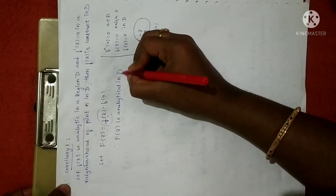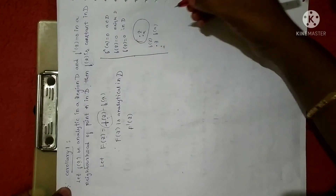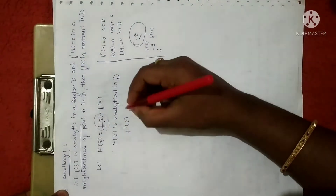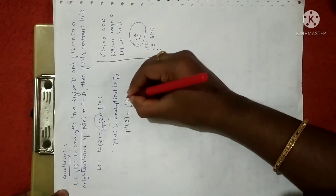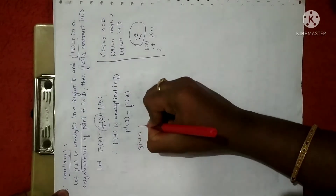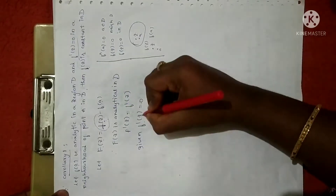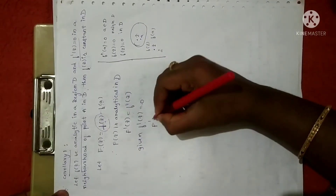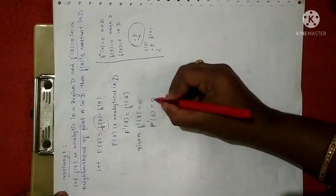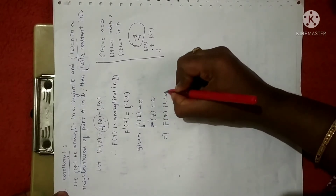The meaning of analyticity is differentiability — if the derivative of a function exists, then we say the function is analytical. Since F(z) is analytical, I can say F'(z) = f'(z). Now, in the theorem statement it is given that f'(z) = 0. So substituting that, capital F'(z) is also equal to 0. If F'(z) = 0, then F(z) is constant.